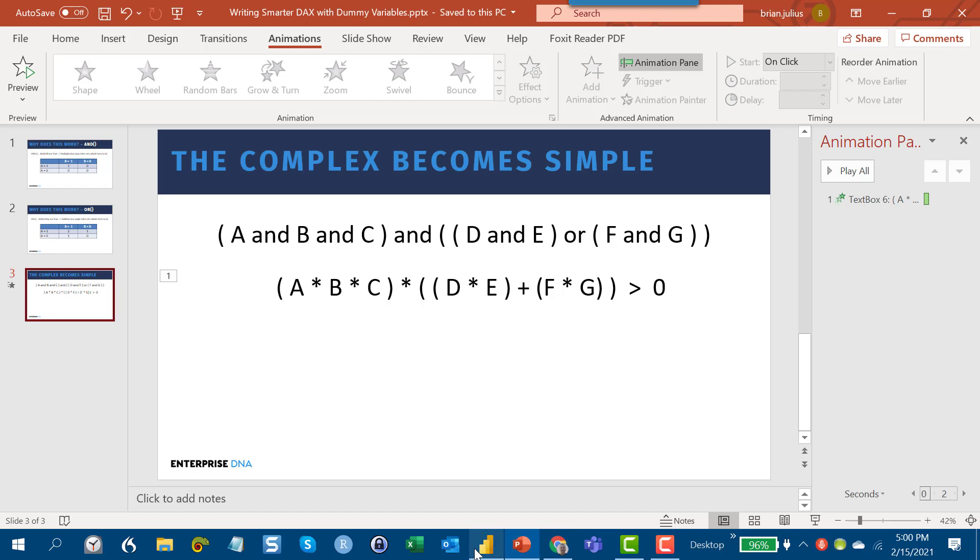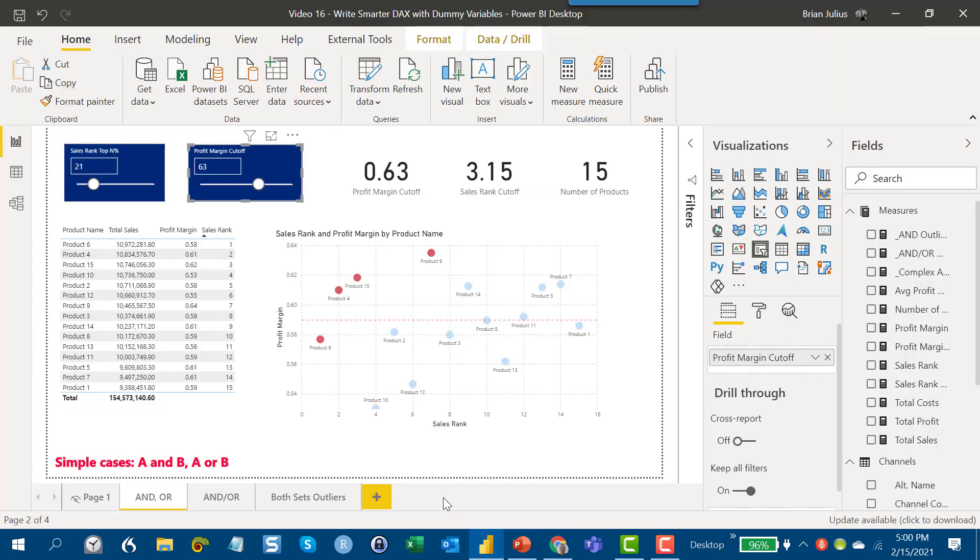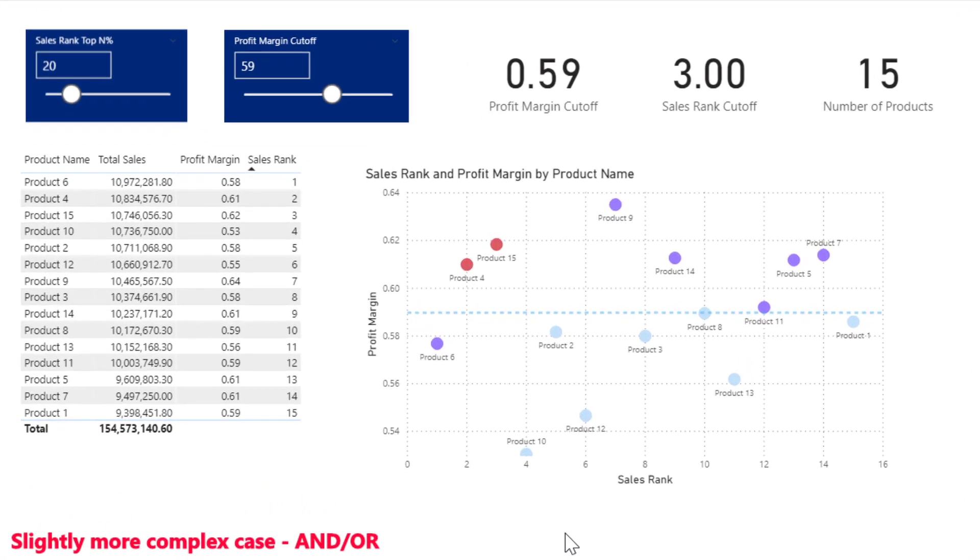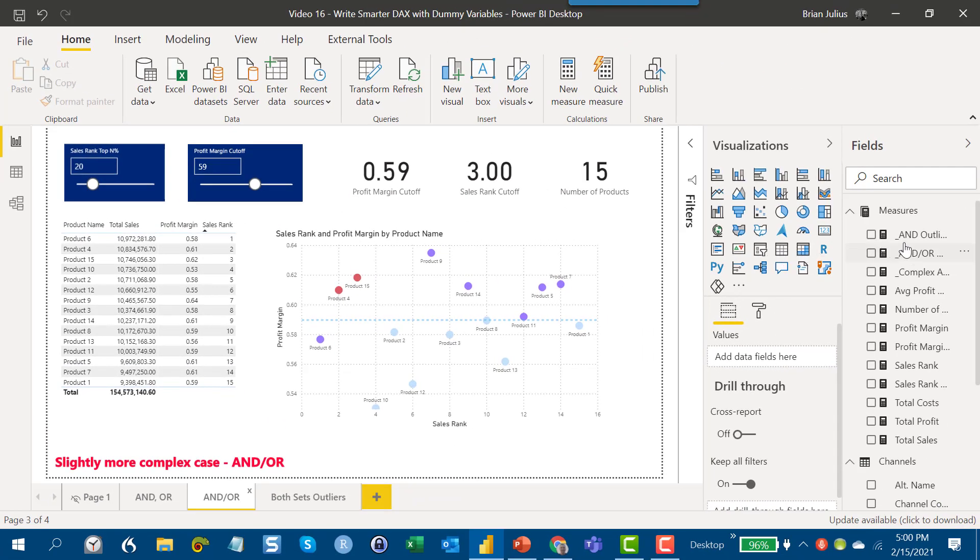And so you can see that for any kind of complex condition, you just sub in those operators and you don't have to worry about writing really complex nested conditionals. And I can go back to the Power BI file and show you how this works in practice. So we talked about AND, we talked about OR, let's talk about a little more complex case which is AND/OR. In this case, what I've got is here's the case where both conditions are true, here's the AND, the purple shows where one condition is true, basically where this first condition on sales rank is true, and then this up here shows where the second condition on profit margin is true.